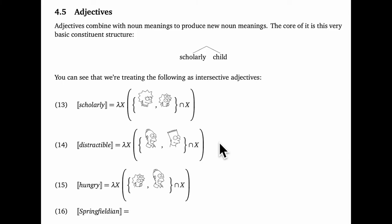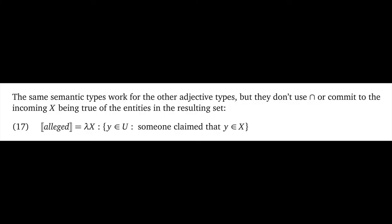The adjectives distractible and hungry are the same way, and Springfieldian would be too. For all these examples, we have a clear entailment for the noun, since we're intersecting the noun meaning with the set that defines the adjective meaning.